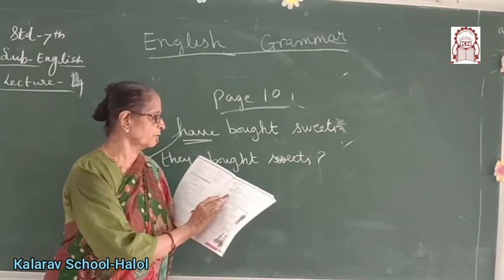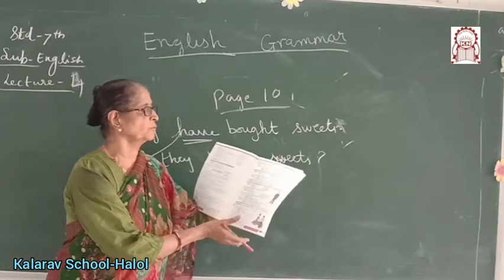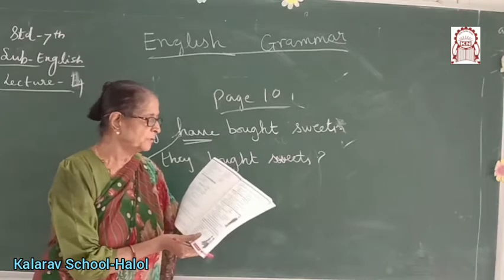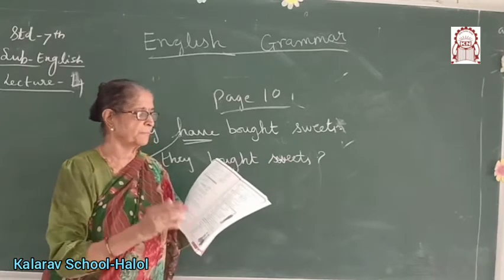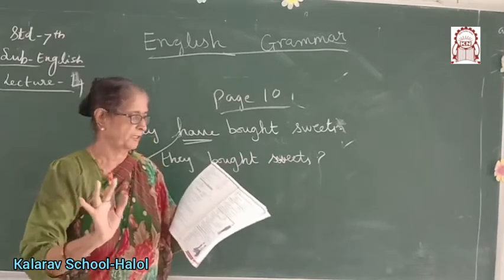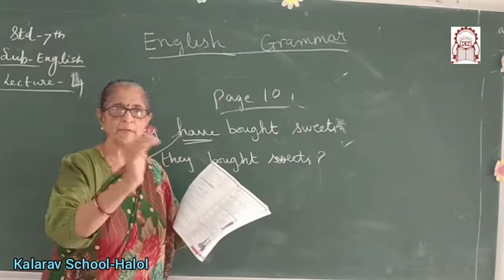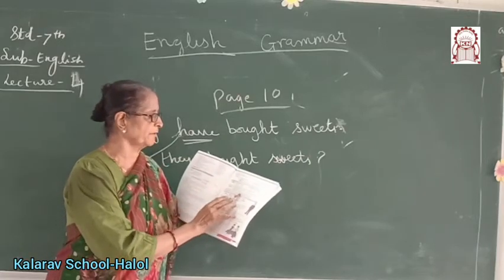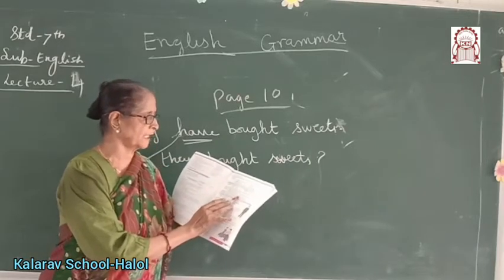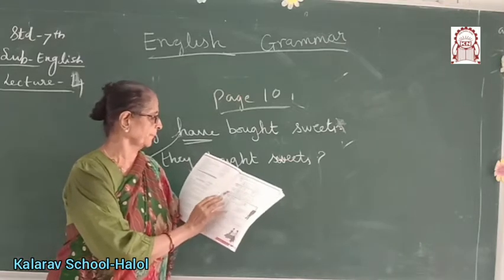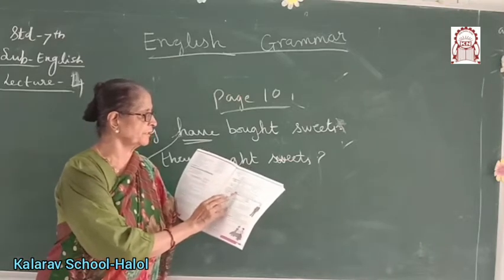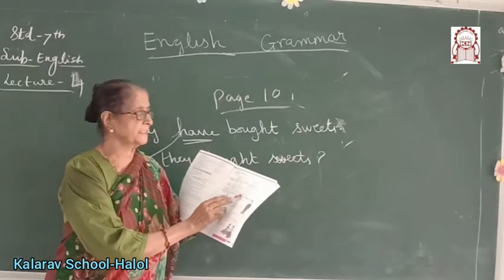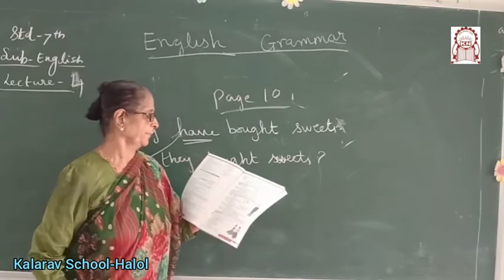Nowadays in informal conversation, 'who' is commonly used instead of 'whom.' For example: 'Whom does she want to meet?' and 'Who does she want to meet?' — both statements are correct. In written English, we generally use 'whom' as it is formal. In spoken English, we generally use 'who' as it is informal.